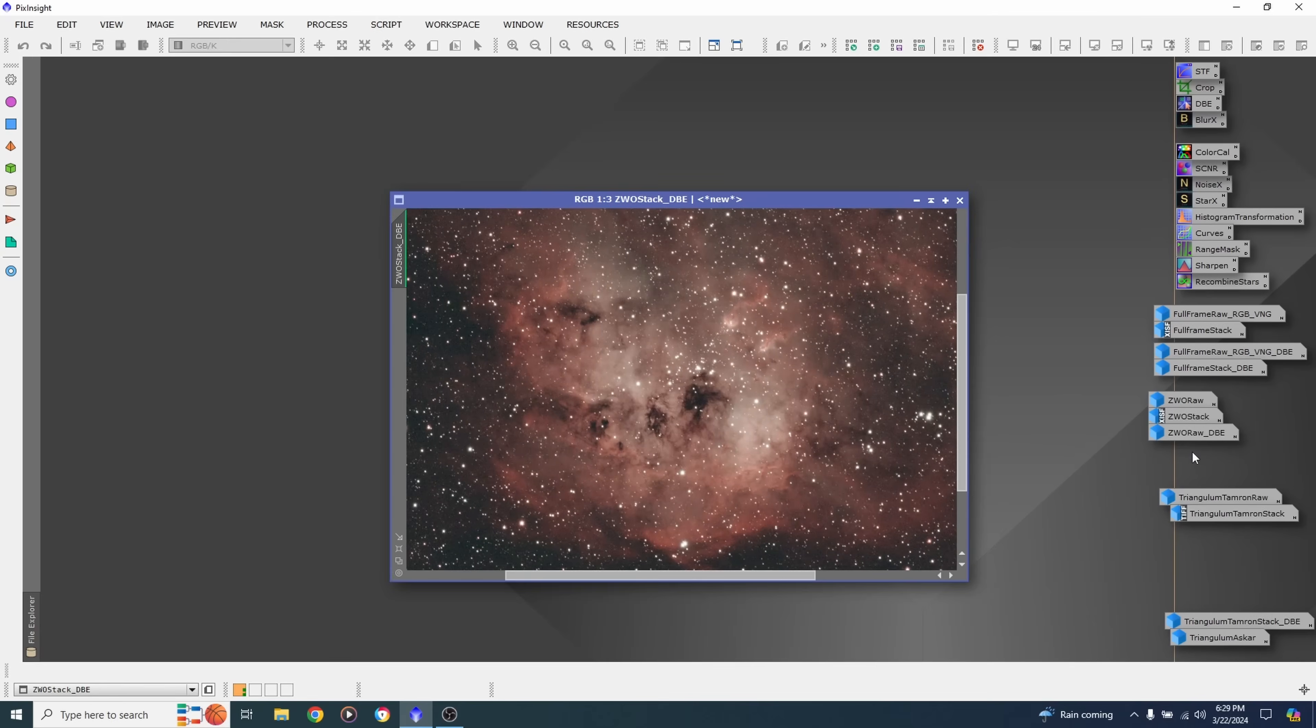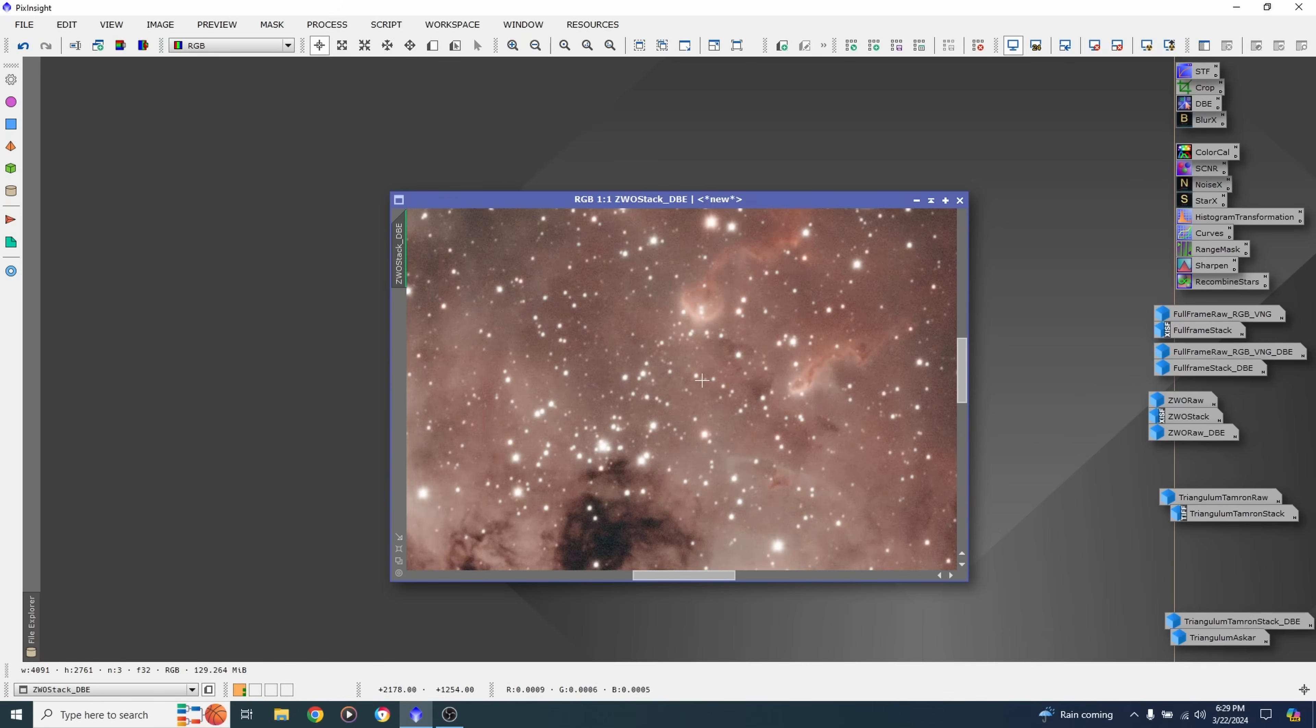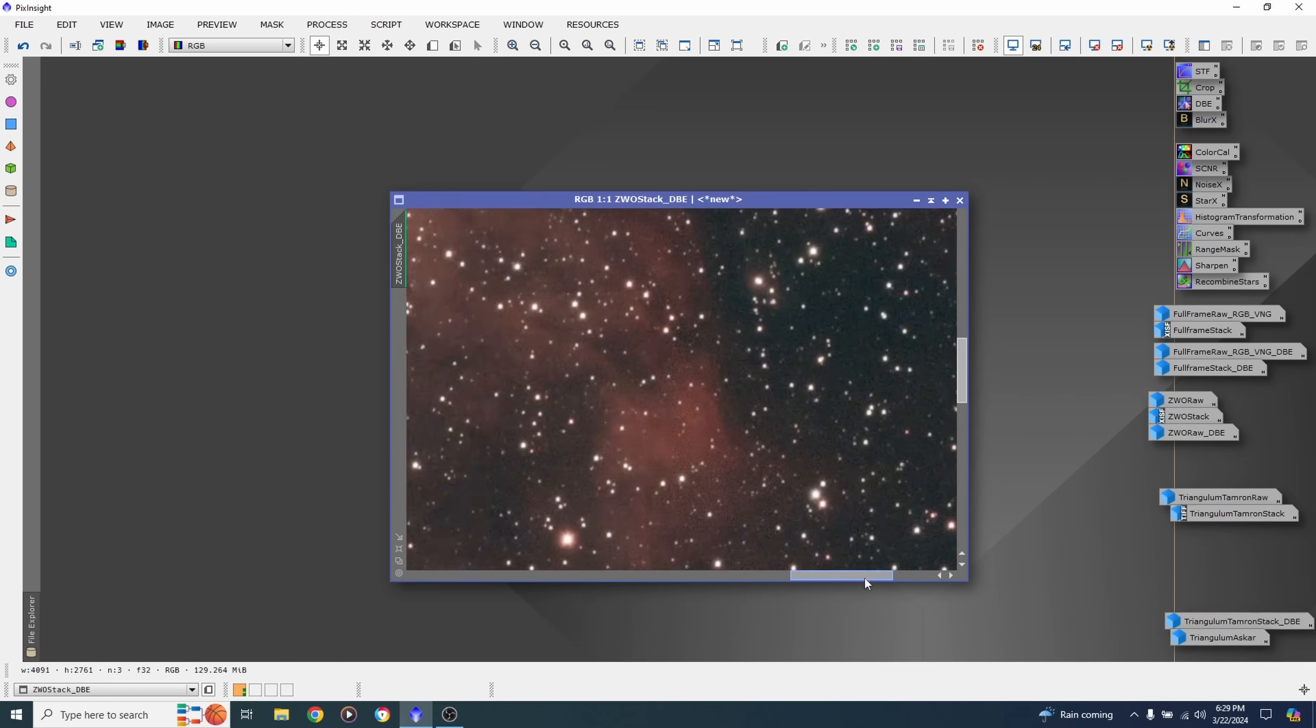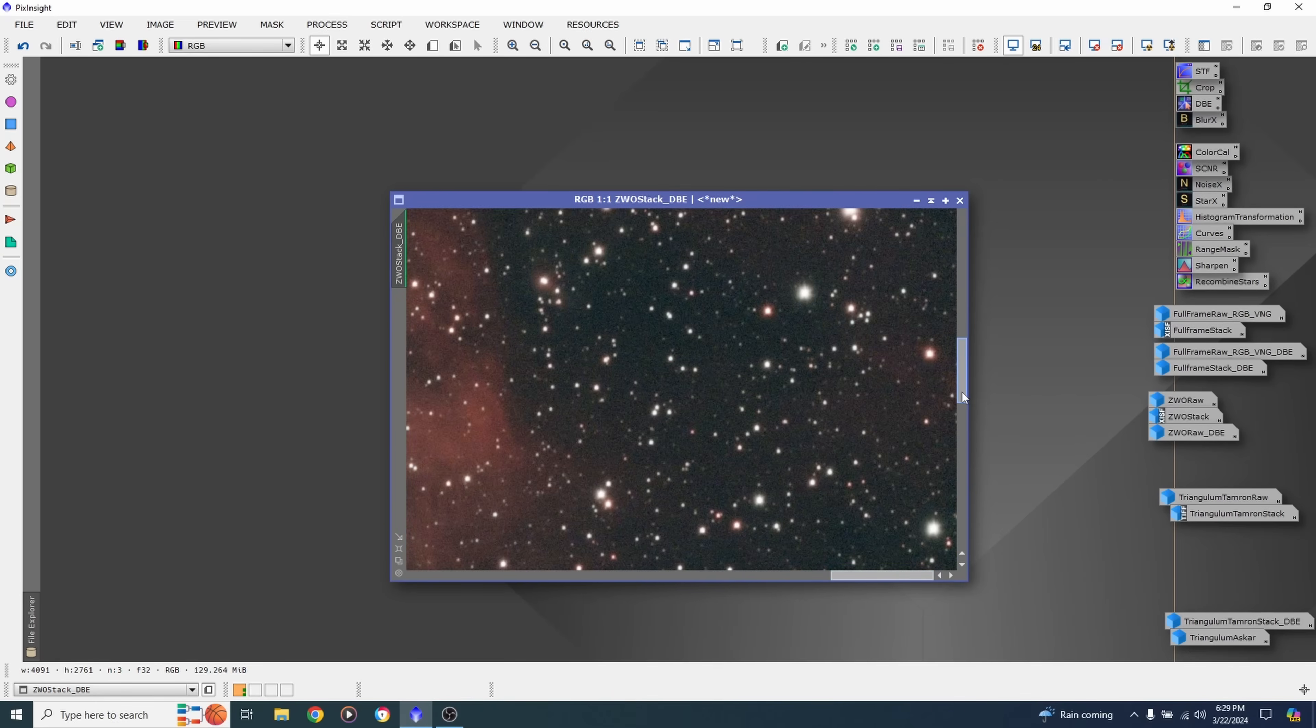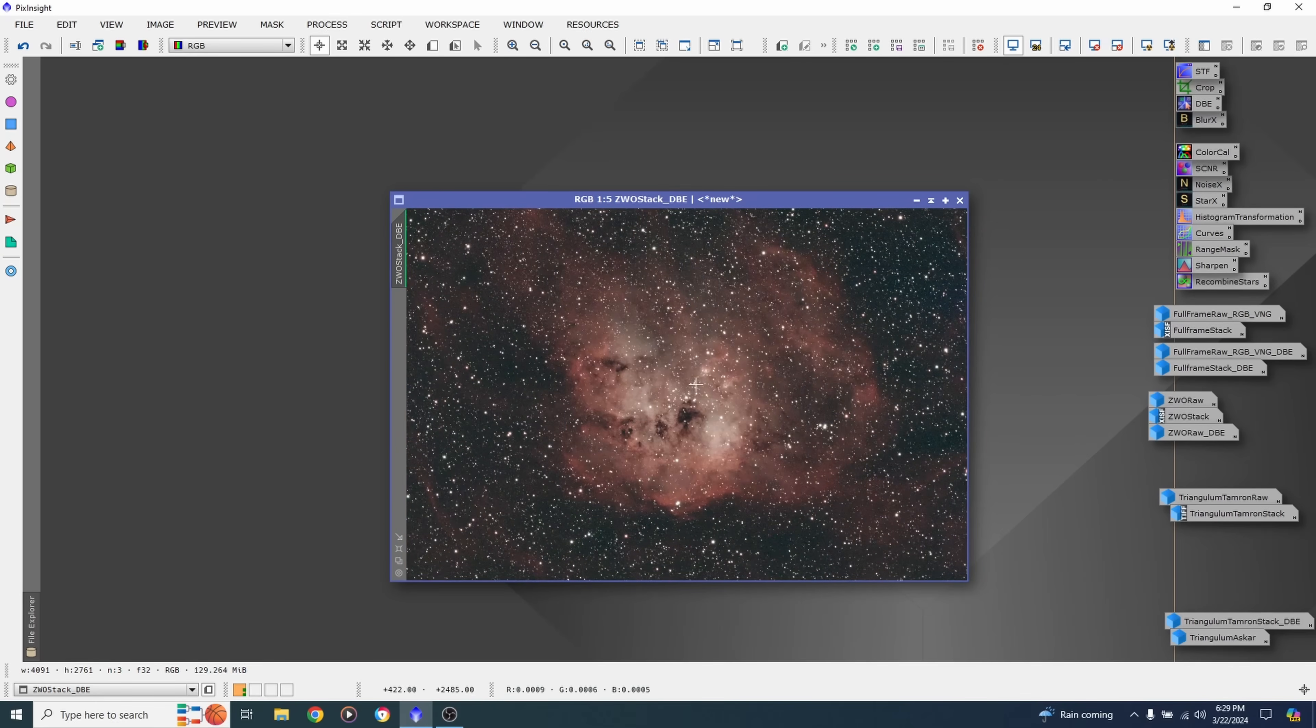Let's look at the stacked version. This is probably three hours worth of data right here. Once again, background's been removed. Color calibration. Everything looks good in the middle. A lot cleaner since it's been stacked. Look at the corners. Looking good. About the same. Corners look great.